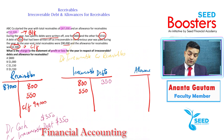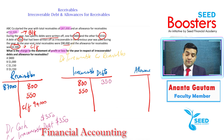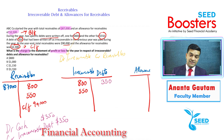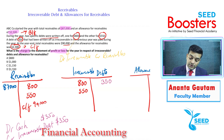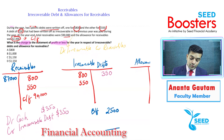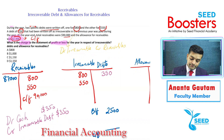The allowance for receivables carry-forward figure is 2,300. Now the trickiest part of the receivables chapter is calculating the change in allowance for receivables. The allowance is a provision, so you have to calculate whether it has increased or decreased and apply the relevant double entry. The brought-forward allowance was 2,500.